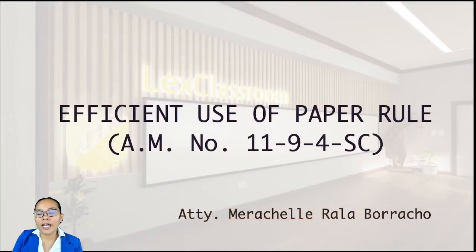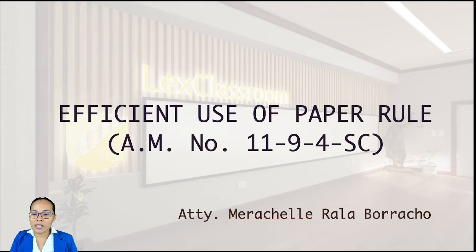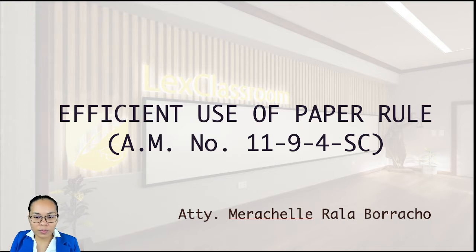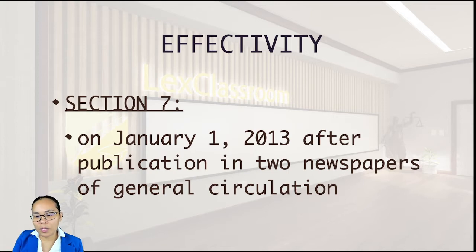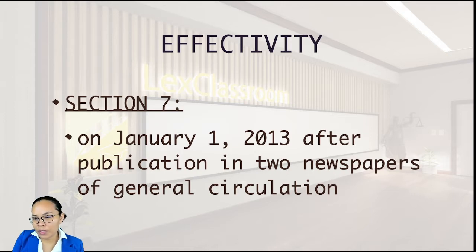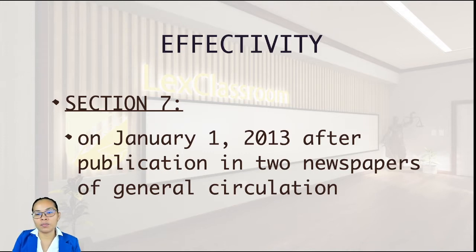Our topic is about Administrative Matter 11-9-4-SC. This means it was issued by the Supreme Court, and it became effective back in January 1, 2013, after its publication in two newspapers of general circulation. In another topic later, I will give you what elements would consider a newspaper as a newspaper of general circulation, because that is still our prevailing rule.